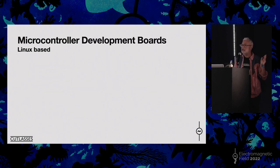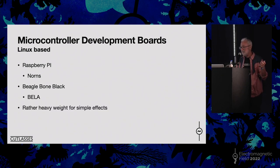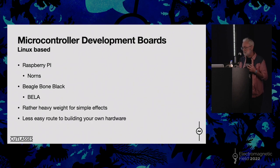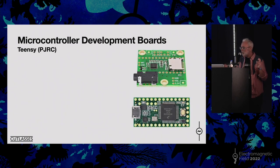Another option is a Linux baseboard such as Raspberry Pi — that's what Norns uses, which is a popular sound computer — or BeagleBone Black, which Bela uses. But in my mind, these are a bit heavyweight for doing simple effects. You don't really want a whole operating system just to process audio live, because it's a lot of hardware you're paying for, and if you want to build many of them, that's a problem. You've also got inherent latency just from using an operating system. What I want to talk about is using these bare-to-the-metal development boards.